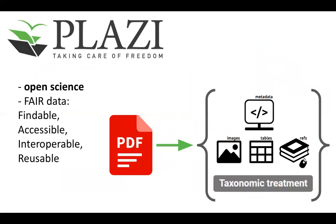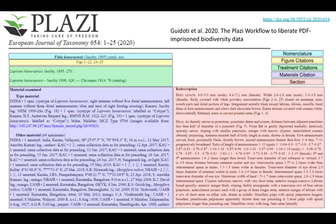Following the principles of open science and FAIR data — making information findable, accessible, interoperable, and reusable — PLAZI has created tools and workflows to liberate information from what they call PDF prison. These workflows extract information by using semantic annotations, marking distinct sections within a paper, like the nomenclature section, citations for references, specimens, figures, and the description section. These kinds of workflows and tools streamline the process of extracting taxonomic treatments from published literature, unlocking the potential for this information to be reused and effectively cited in other studies.